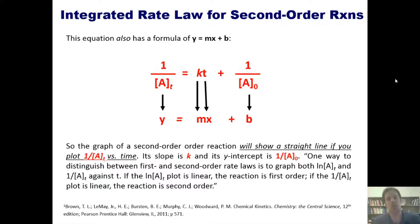Here's the deal, though. The graph of a second order reaction will show a straight line if you plot one over A versus time. Its slope is k and its y intercept is one over A sub 0.